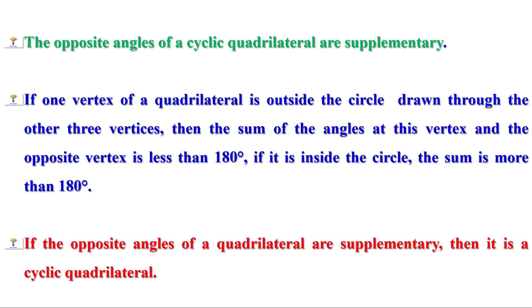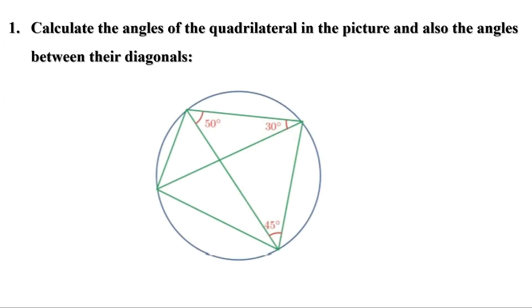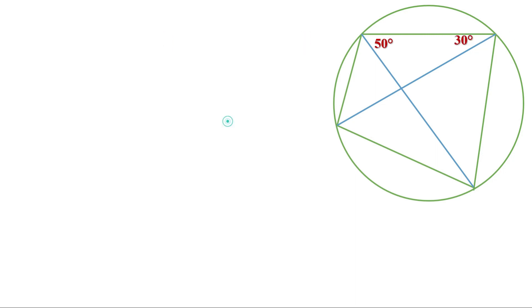There was a homework. Let us check the answer now. Calculate the angles of the quadrilateral in the picture and also the angles between the diagonals. Let us take the figure first. These are the angles given. Now let us give a name for convenience. Look at these two angles — they are angles made by arc BC on its alternate arc.